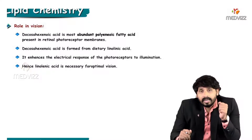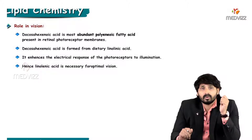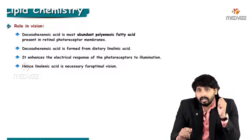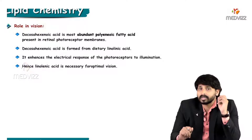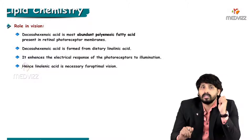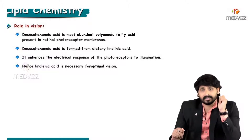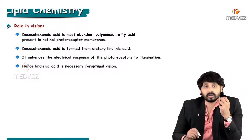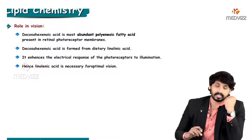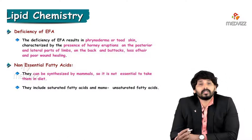Regarding the role in vision: docosahexaenoic acid is the most abundant polyenoic fatty acid present in retinal photoreceptor membranes. It plays a major role in the visual cycle. Docosahexaenoic acid is formed from linolenic acid — without linolenic acid there is no docosahexaenoic acid, resulting in impaired vision. It enhances the electrical response of photoreceptors to illumination, hence linolenic acid is necessary for optimal vision.